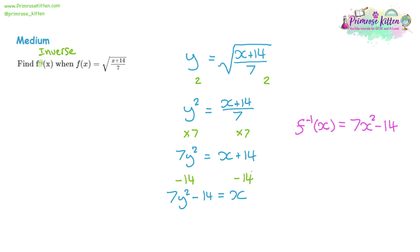So the method is: pretend that f of x is y, rearrange it to make x the subject, then at the end write out the expression you've got — but don't write y's, write x instead.